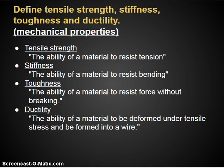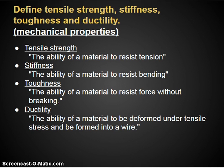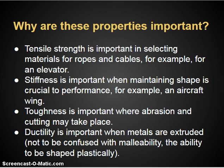Mechanical properties of materials include tensile strength, stiffness, toughness, and ductility. Tensile strength is the ability of something to resist tension. Stiffness is the ability of a material to resist bending. Toughness is the ability of a material to resist force without breaking — though toughness and hardness can be hard to separate. Ductility is the ability of a material to be deformed under tensile stress and formed into a wire. There's also malleability — the ability to be flattened out — though it's not addressed here.